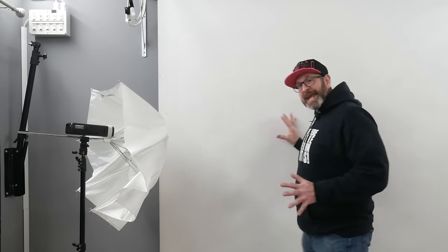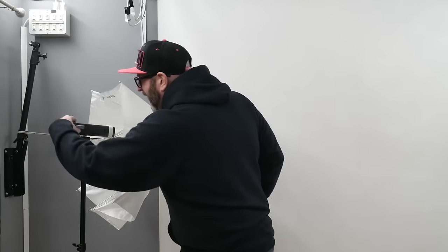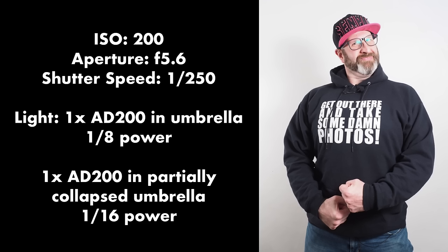So moving your subject away from the thing the shadow is falling on is one technique. Moving your light to change where the shadow falls is another technique. The third technique is to bring light into the area where the shadow is being cast. This light is pointing at the area on the backdrop where that shadow was falling, so when we turn this light on and take a photograph, we get a beautiful, clean portrait with a clean background with no shadow because we added light to fill that shadow in.